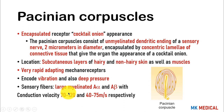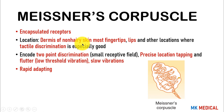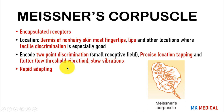Meissner's corpuscles are encapsulated and found in the dermis of non-hairy skin — mostly at the fingertips and lips, where tactile discrimination is needed. They encode two-point discrimination — the ability to distinguish two closely placed points on the skin as separate — made possible by their small receptive field. They also encode precise location, tapping, flutter, and slow vibrations. They are rapidly adapting receptors.